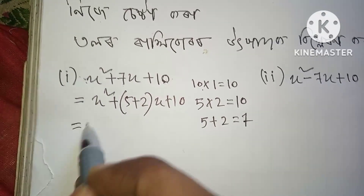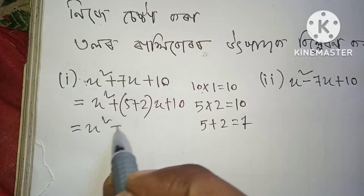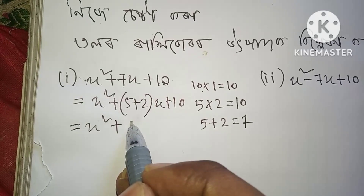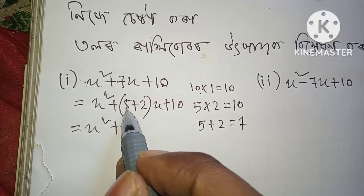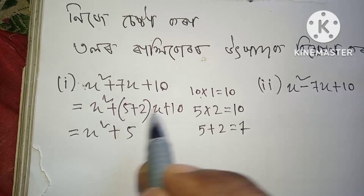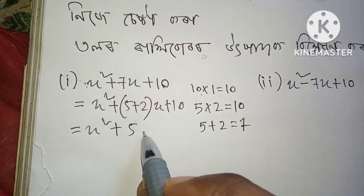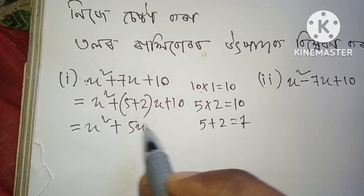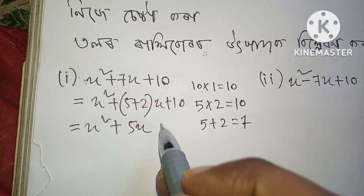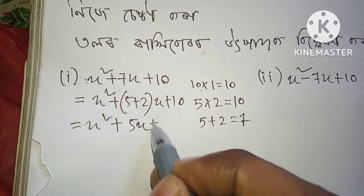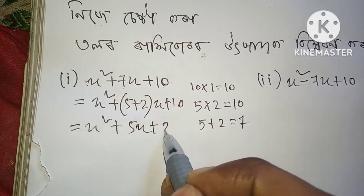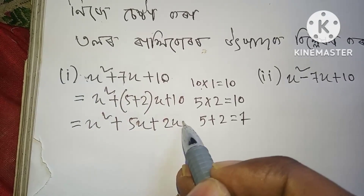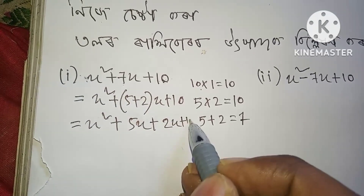x square plus 5x plus 2x plus 10, giving factors x plus 5 and x plus 2.